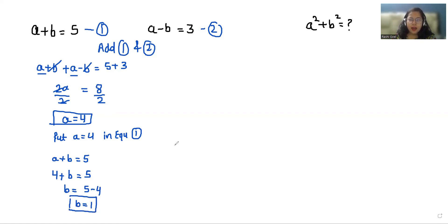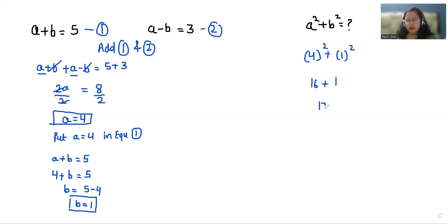I have to find the value of a squared plus b squared. So a is 4, so 4 squared plus b is 1, 1 squared. 4 squared is 16, plus 1, that is 17. The value of a squared plus b squared is 17.